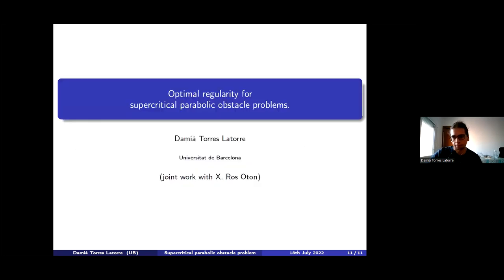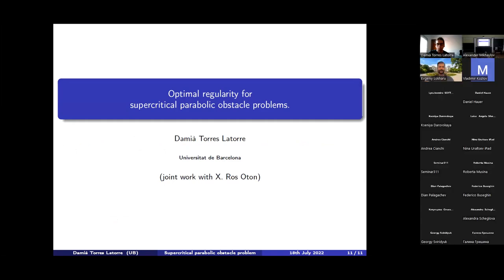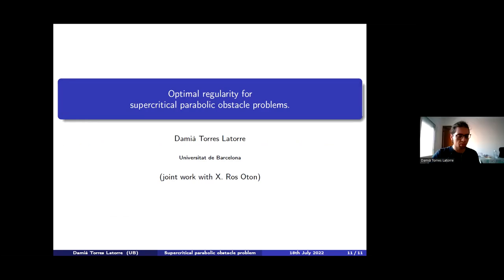Thank you. Questions? Okay. Damia, is anything known about just critical case? S equals one half. Yes, but they are working on it. As far as I know, like Rosaton, Serra, Figalli, they had something, but they are working on it. Okay. Damia, and what is your requirements for the regularity of obstacle? The obstacle is assumed to be C^{2,1}, I think. It's just so that you can get semi-convexity of the solution at the beginning. Then for the other part, I think C^{1,1} is enough. Okay. Thank you.